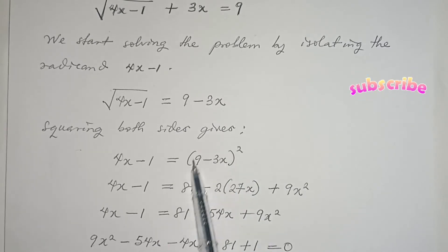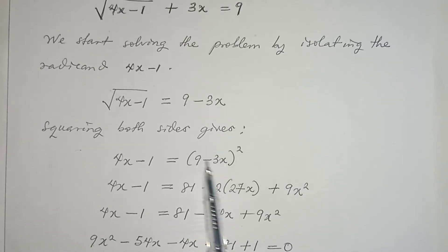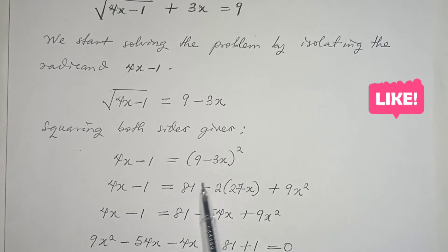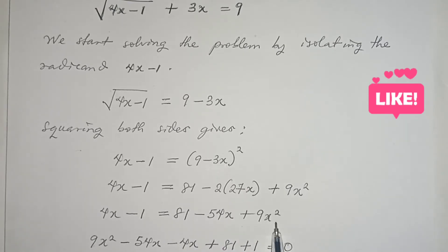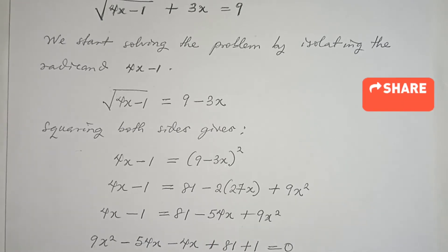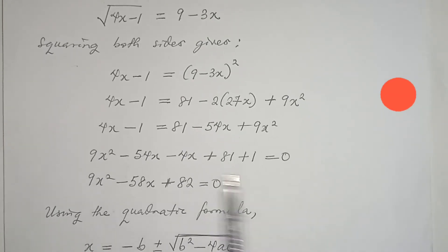When you expand (9 minus 3x) squared: 9 multiplies itself to give 81, minus 3x multiplies itself to give plus 9x squared, and 9 times minus 3x gives minus 27x, which when multiplied by 2 gives minus 54x. So the expansion is 81 minus 54x plus 9x squared. So we have 4x minus 1 equals 81 minus 54x plus 9x squared.